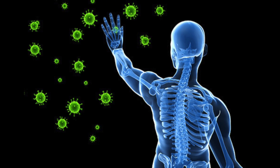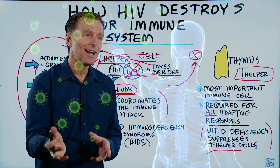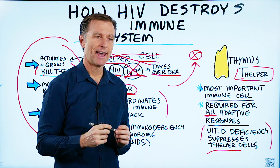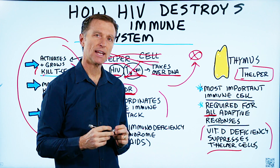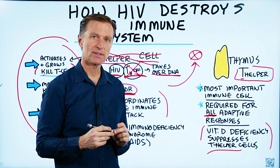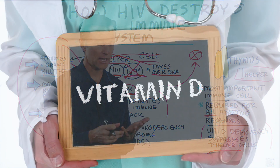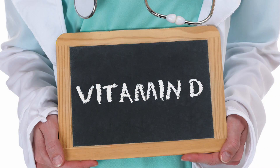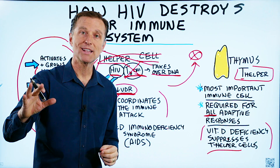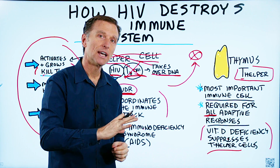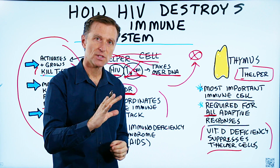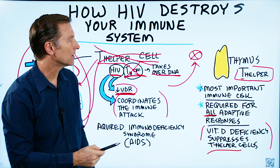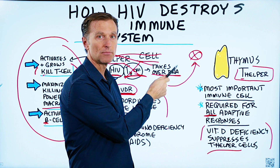It all comes back to having a strong immune system in the first place to prevent an infection, and also understanding the key nutrients involved in that. Vitamin D is one of the big ones. If you want to know all the nutrients involved in a strong immune system, I created a video right here — check it out.